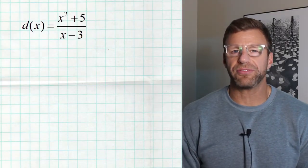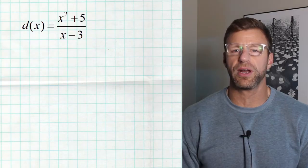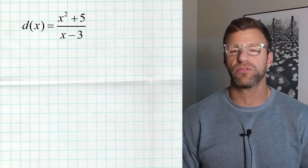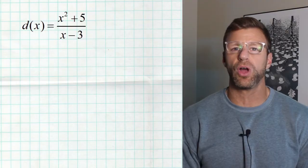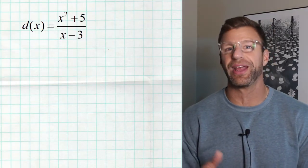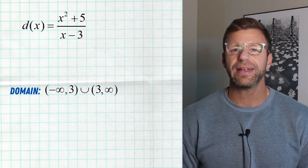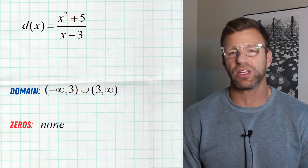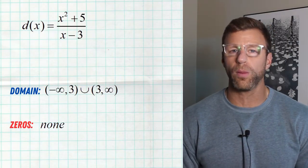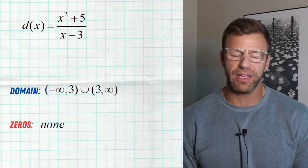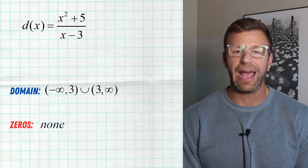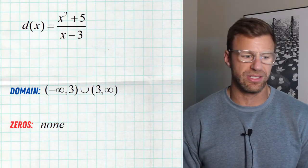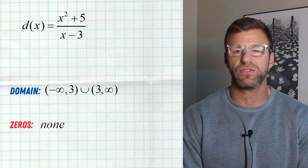In this final example, we don't have to factor anything because there's nothing to factor. The denominator is already its own linear factor, x minus three, and the numerator is an unfactorable quadratic, x squared plus five. First, look at the denominator — we exclude three, so the domain is negative infinity to three, three to infinity. Now, if we look at that numerator, there are no values that make it zero. If you try to factor it or use the quadratic formula, you get a negative inside the square root, which means there are no real zeros. This particular rational function has no zeros — the graph won't cross the x-axis anywhere.